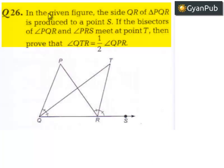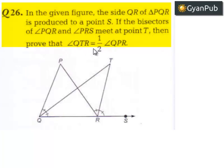Moving on to the 26th question. In the given figure, the side QR of triangle PQR is produced to a point S. If the bisectors of angle PQR and angle PRS meet at point T, then prove that angle QTR is equal to half times angle QPR.